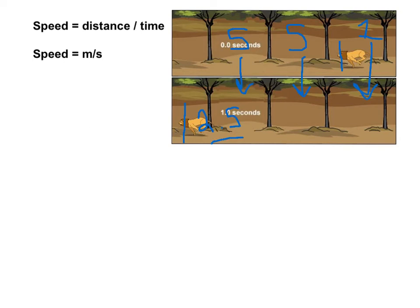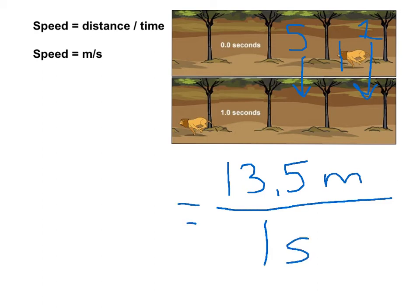If we add all these up, 5 and 5 is 10, 11, and then 2.5 would be 13.5 meters. That's a good estimate of the distance the lion has traveled. We're going to divide that by the time. We went from time zero to time one second. So it was one second, and if we set that equal to the speed, 13.5 divided by one is 13.5 meters per second.